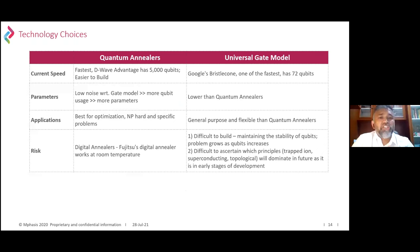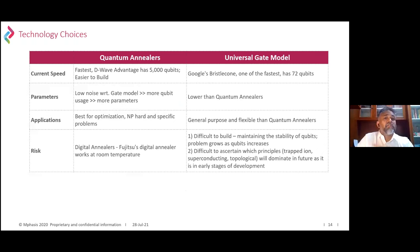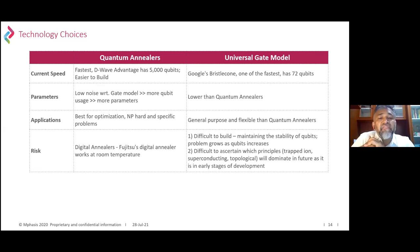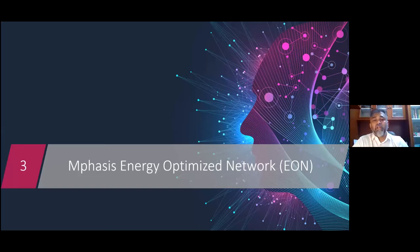When looking at technology choices for adopting quantum, there are two types of systems: annealer-based systems and gate-based systems. We're going to talk more about annealer-based systems, which is D-Wave's approach. Both have their own benefits and disadvantages, but the D-Wave Advantage systems and LEAP systems are extremely powerful, easy to build on, and we're seeing fantastic results. Most of the demo examples towards the end are solutions built on annealer-based D-Wave systems.